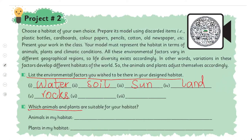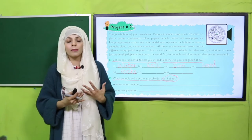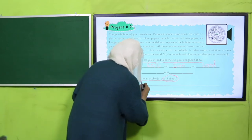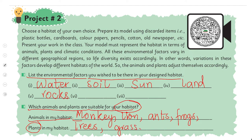The next question is: which animals and plants are suitable for your habitat? For example, I have created a forest habitat, so which plants and animals are suitable there? List them. Animals in my habitat: monkey, lion, ants, frogs. Similarly, you can write names of different animals.